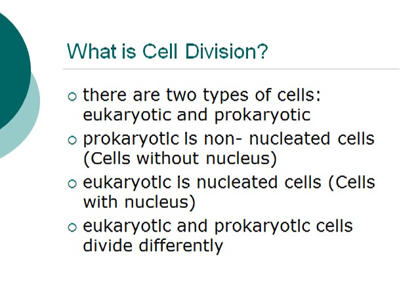There are two types of cells: eukaryotic and prokaryotic. Prokaryotic cells are non-nucleated cells, which means cells that don't have a nucleus. Eukaryotic cells, on the other hand, are cells that have a nucleus. Please note that eukaryotic cells and prokaryotic cells divide very differently.